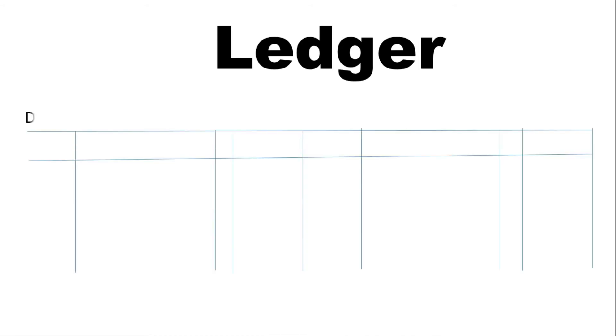Let's look at the format of the ledger. This ledger has a debit side and a credit side. If you have a date and particulars, there is a journal folio column. You can write the account reference in the journal folio across three pages.